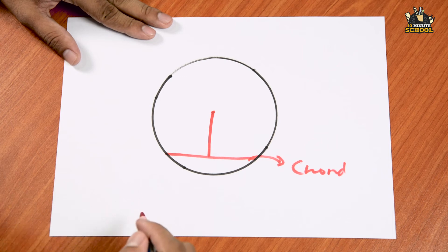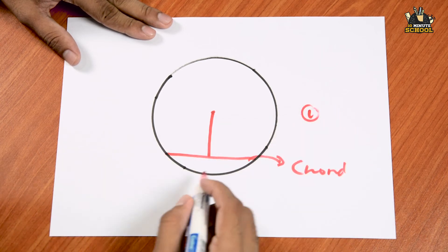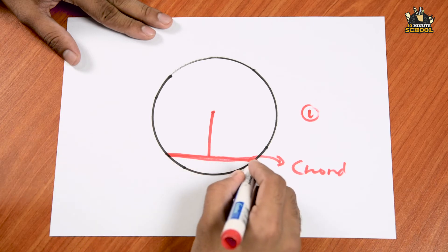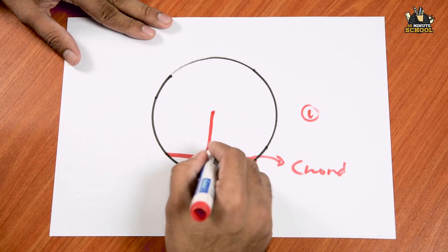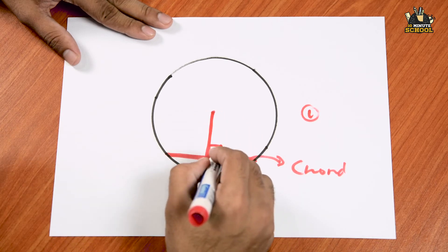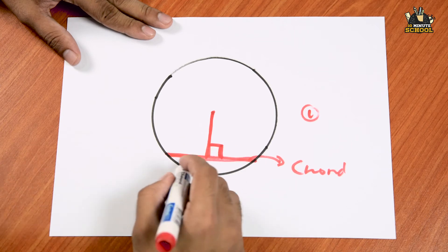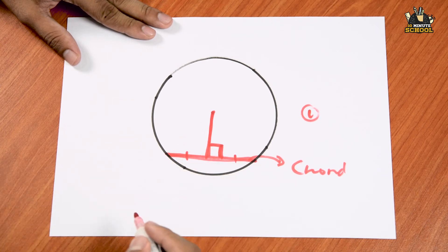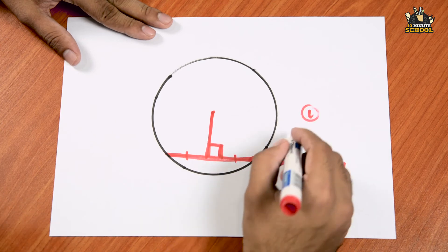There are two theorems. This symbol is number one. So, the chord is to the perpendicular. And we have the center. So, this is number one.